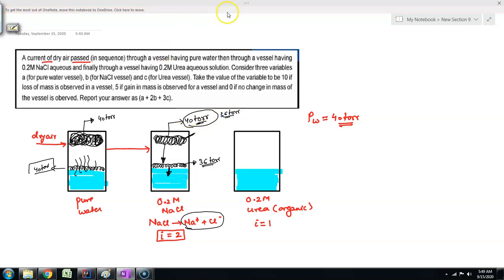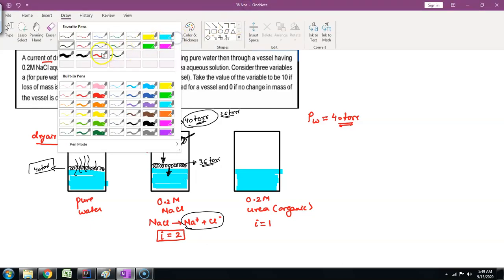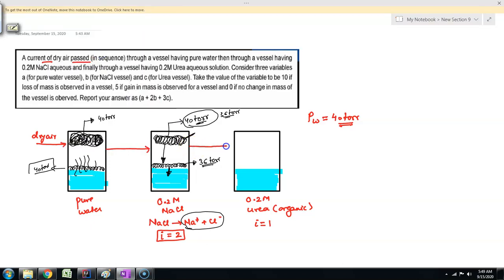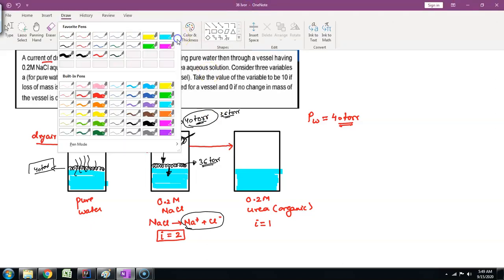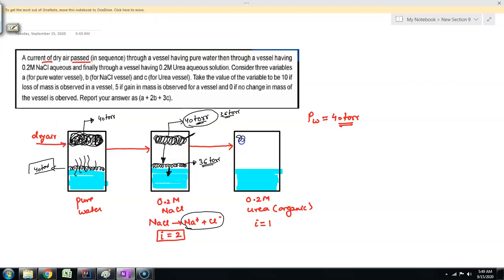At this point the air above would have dropped the water vapor content pressure to 36 torr. Now this is the air which enters the third chamber. When this air enters the third chamber, it will be having water vapor corresponding to 36 torr. Now let us assume what will be the water vapor pressure above this. Now here it is not dissociating.